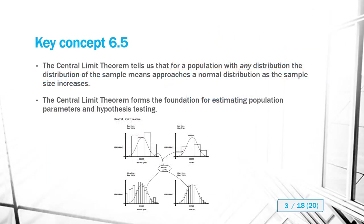The key concept from section 6.5 on the central limit theorem is that the central limit theorem tells us that for a population with any distribution, the distribution of the sample means approaches a normal distribution as the sample size increases. The central limit theorem also provides the foundation for estimating population parameters and hypothesis testing, which we'll get into in the next couple of chapters.